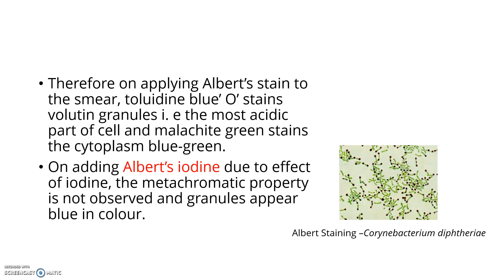Because the cytoplasm already has an acidic nature, the volutin granules are acidic, and when basic dyes are added, there is stronger attachment of the stain to the volutin granules. On applying Albert stain to a smear, toluidine blue stains the volutin granules — the most acidic part of the cell. Malachite green stains the cytoplasm blue-green. Then Albert's iodine is added; due to iodine's effect, the metachromatic property is not observed and the granules appear green in color.